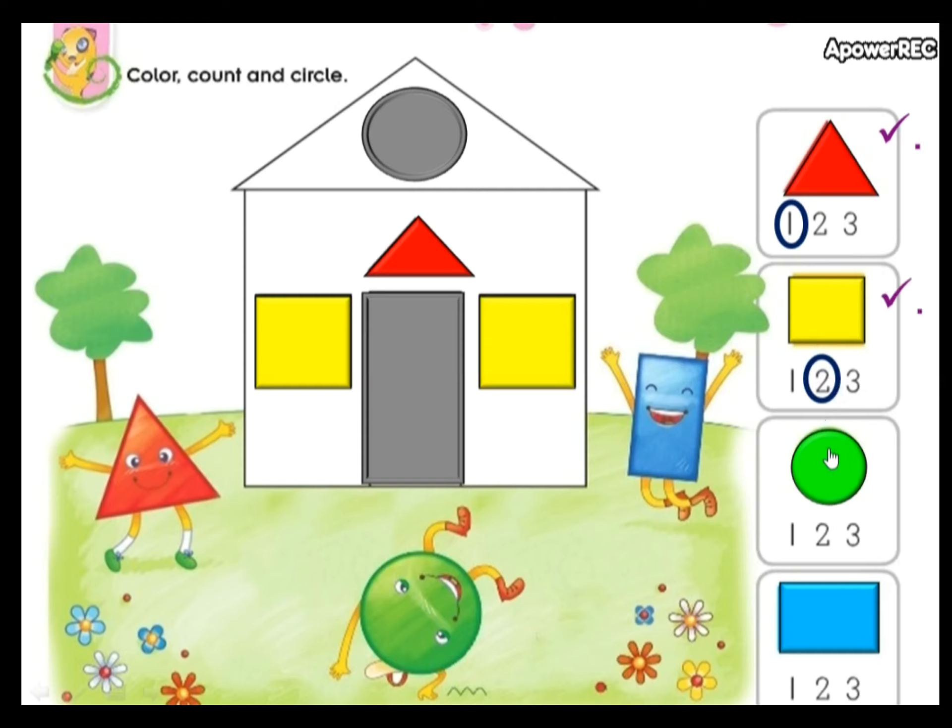Now let's find the circles. Find the circles and click on them. Awesome. Count them. One. It's only one. Circle the number one. One green circle.